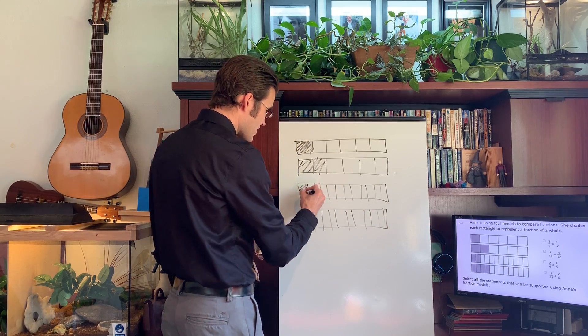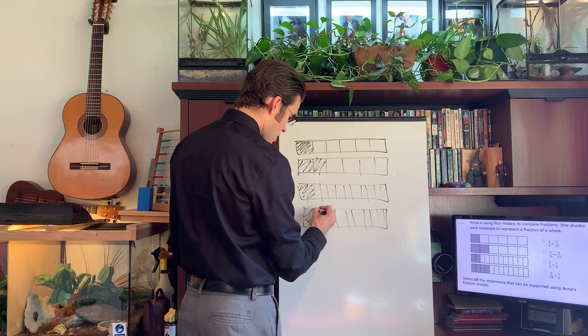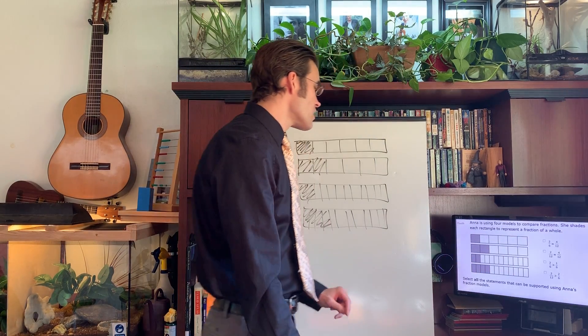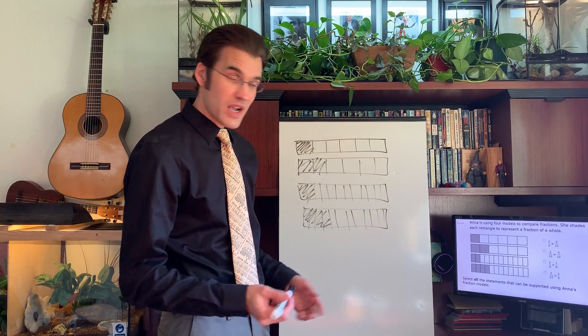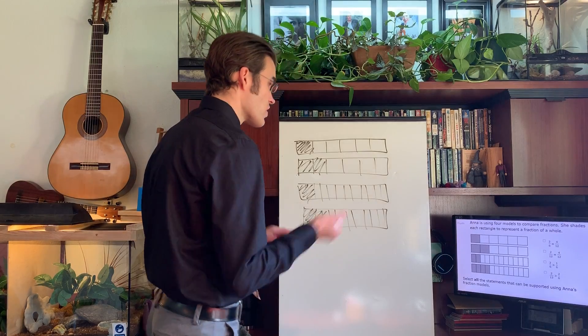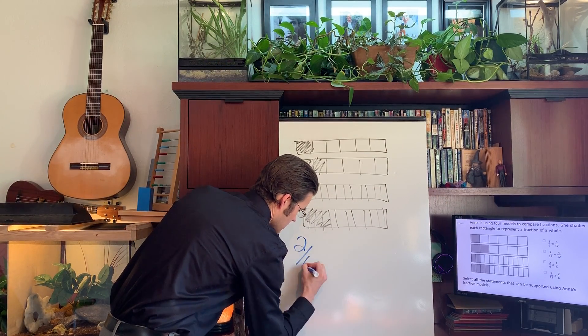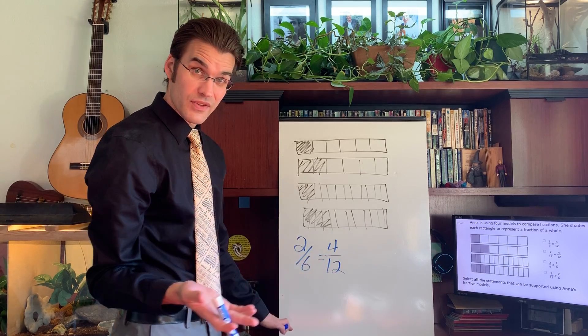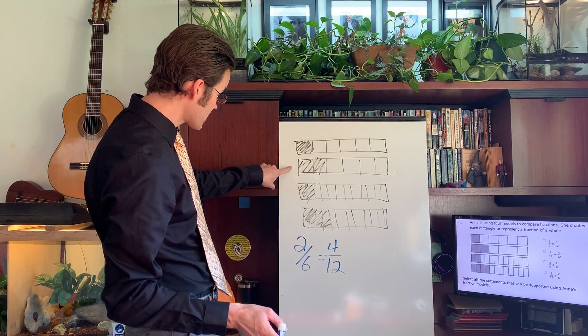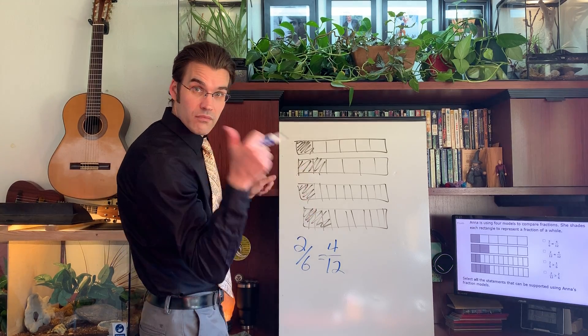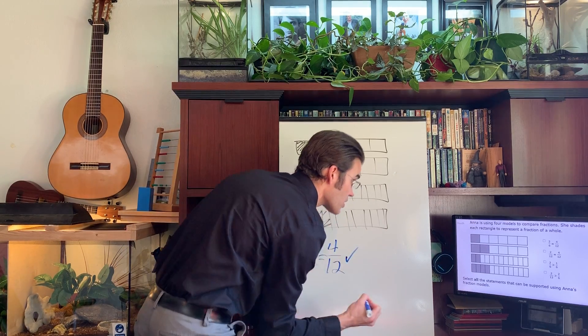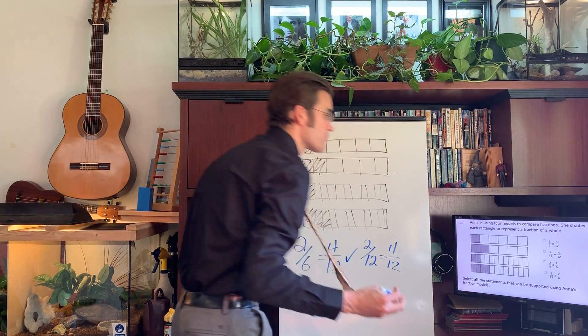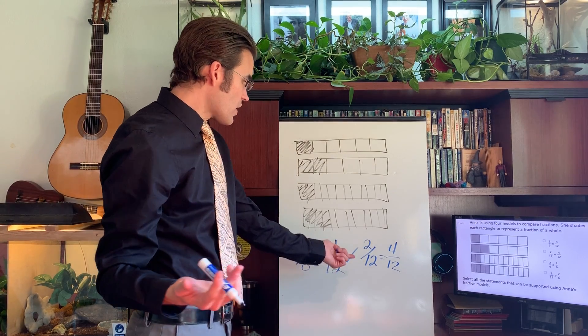This one is two twelfths and four twelfths. Now the question is, which of these math statements can be supported by the fraction model? The first one is two sixths equals four twelfths. Is that statement true? It is, right? Does our fraction model support it? Two sixths is equal to four twelfths. It is. We're going to give this a check mark. The next one is two twelfths equals four twelfths. Well, we know that's not true. How can two twelfths equal four twelfths? We're going to cross that one off.